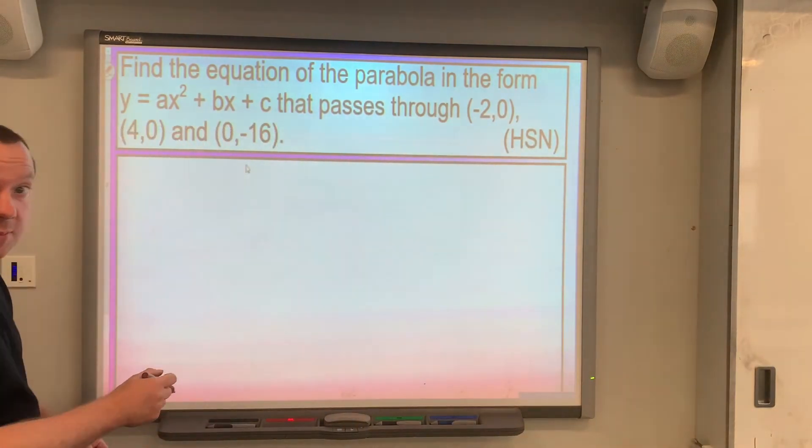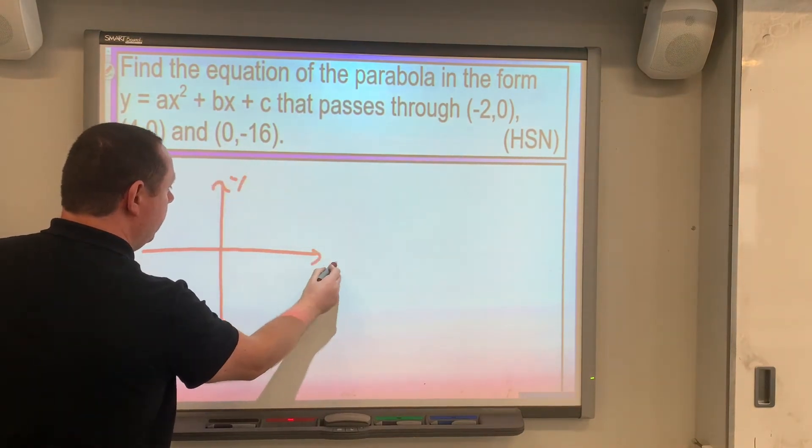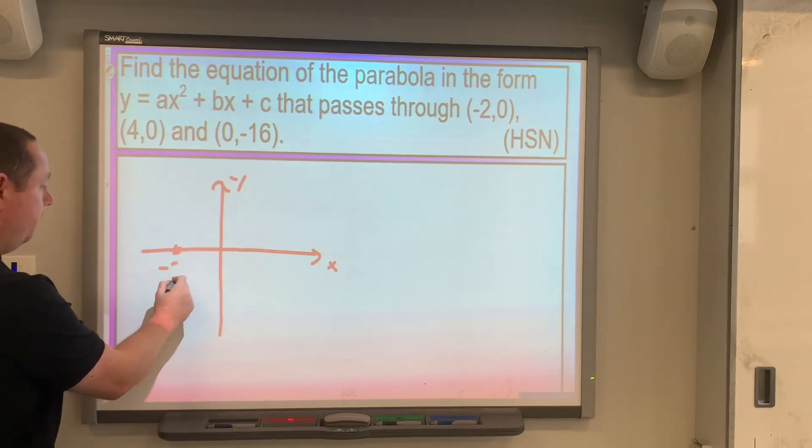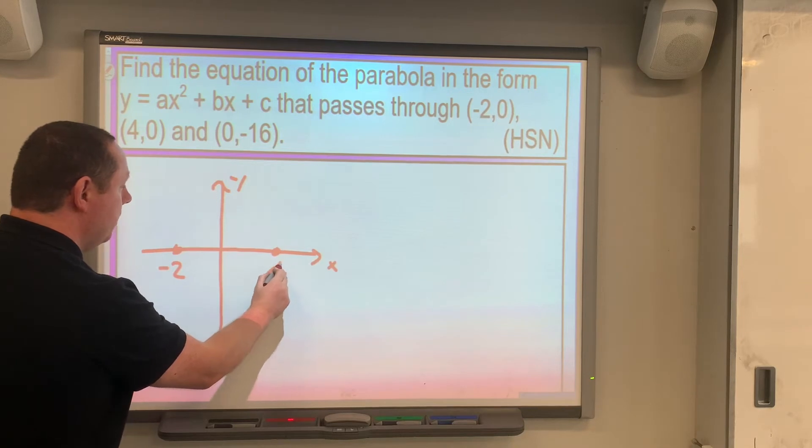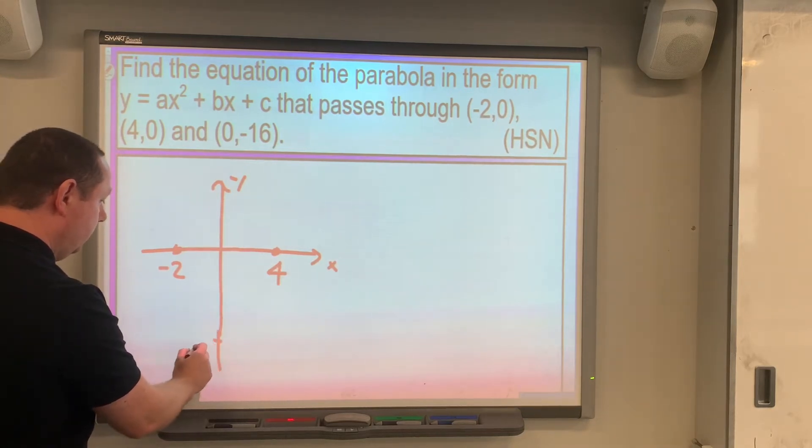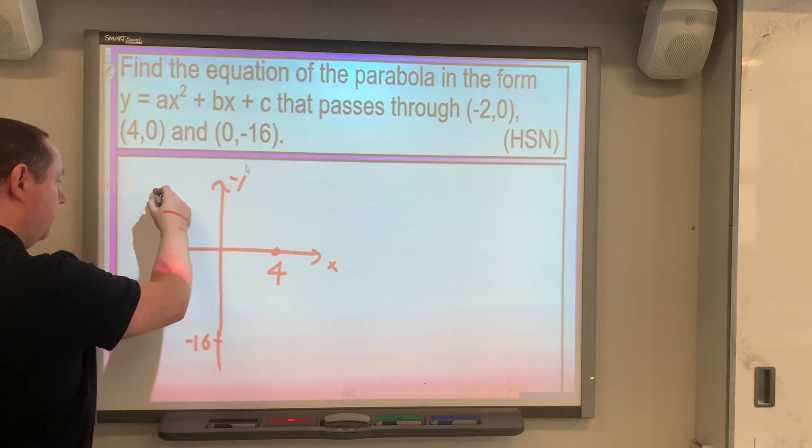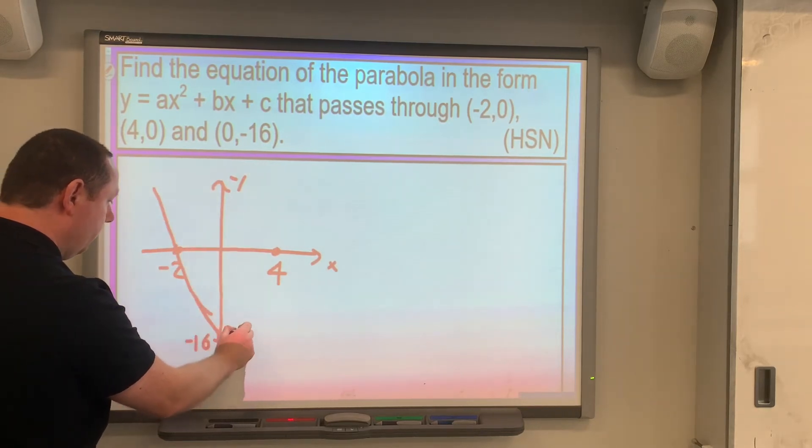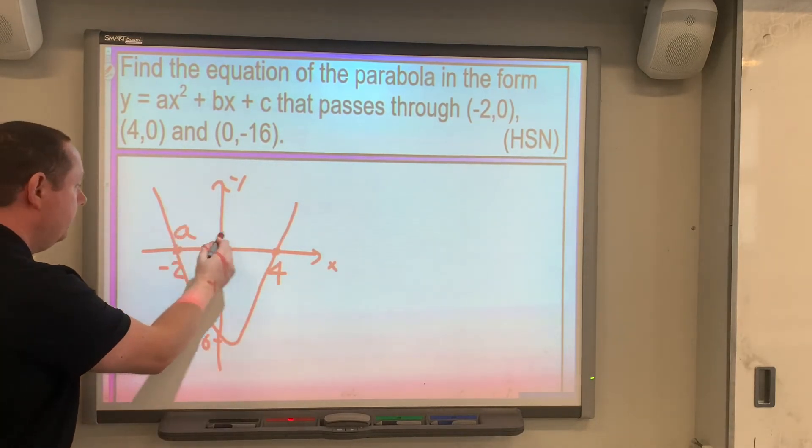Drawing our y and x axis, we have (-2,0), we have (4,0), so there's our roots. And (0,-16) down there somewhere. So we know that our parabola is going to look something like this, where that's a, that's b.